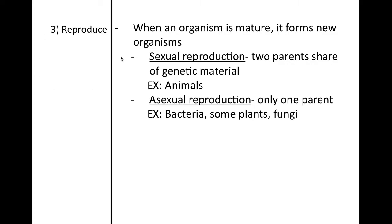The third characteristic that makes an organism living is that it is able to reproduce. When an organism is mature, after it has developed, it forms new organisms. For example, a human adult will create a child.